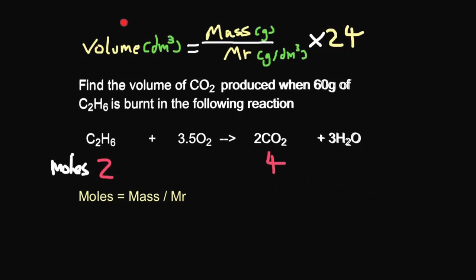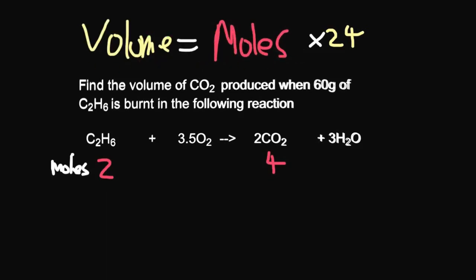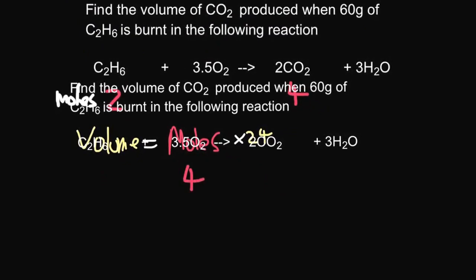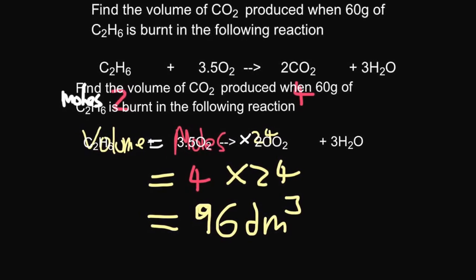So notice in this equation, we want to look at volume. So volume equals mass divided by Mr times 24. Well, mass divided by Mr equals moles. So we can substitute this bit for moles. So the volume equals moles times 24. We've got the moles. The moles equals four. So it's four times 24 equals the volume. So that comes out at 96. And the units are dm cubed. So it's 96 dm cubed. And that's the answer to our question.